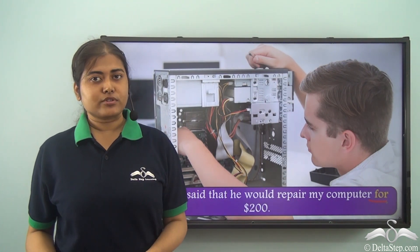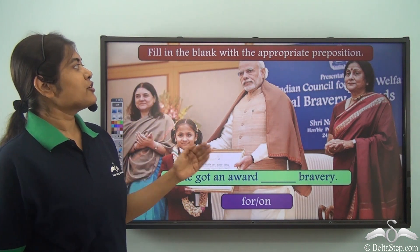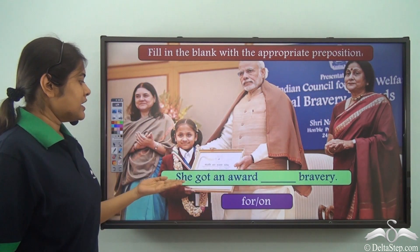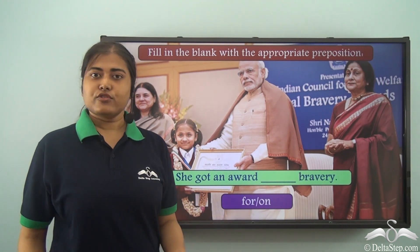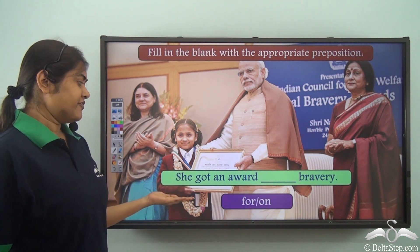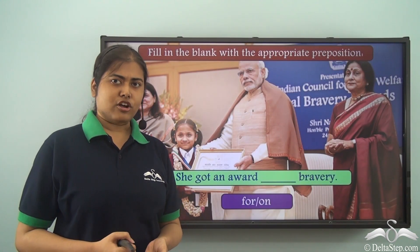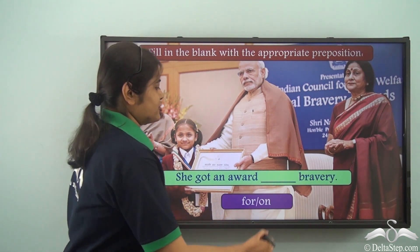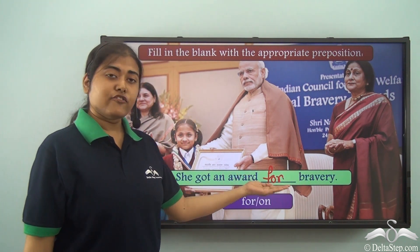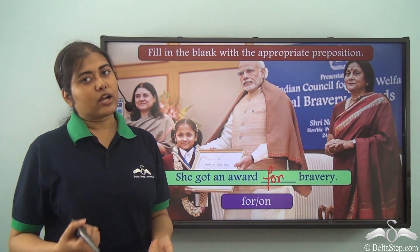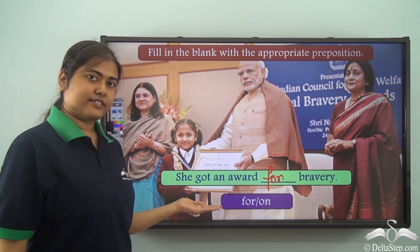We have learnt quite a number of uses of the preposition 'for.' Now let us look at one exercise. Fill in the blank with the appropriate preposition: She got an award ___ bravery. The options are 'for' and 'on.' Saying 'she got an award on bravery' does not make sense. The correct answer is 'for' — she got an award because of her bravery, so 'for' gives the sense of reason.